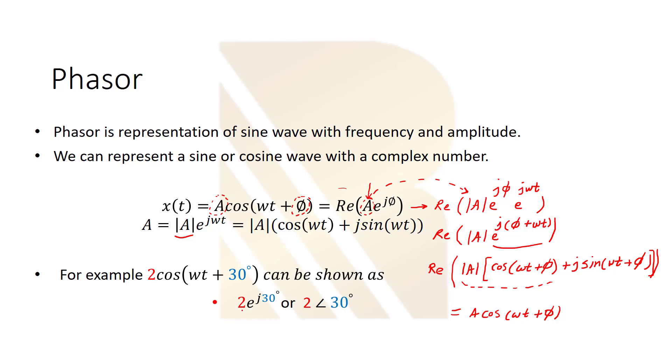It's very simple. We can show it like a 2 and e to the power of j30, as you see here, or 2 with 30 degrees. We have two kinds of methods to show this phasor here. And we call this phasor. So this is our amplitude. And this is our phase.